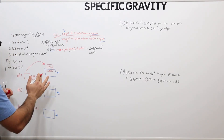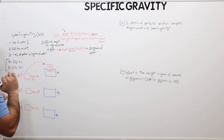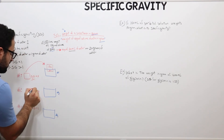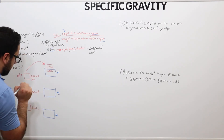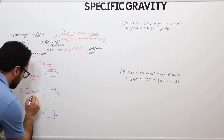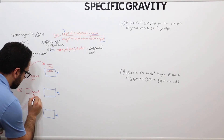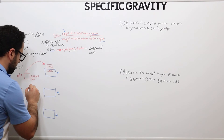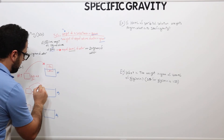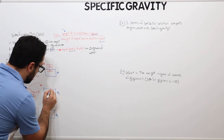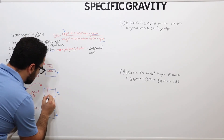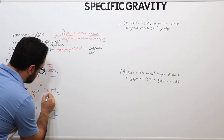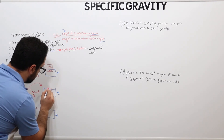For object number 2 with a specific gravity of 0.9, this means 90% will be submerged in water. So if I take this and put it in bucket 2, only 10% will be on top and 90% will be submerged.